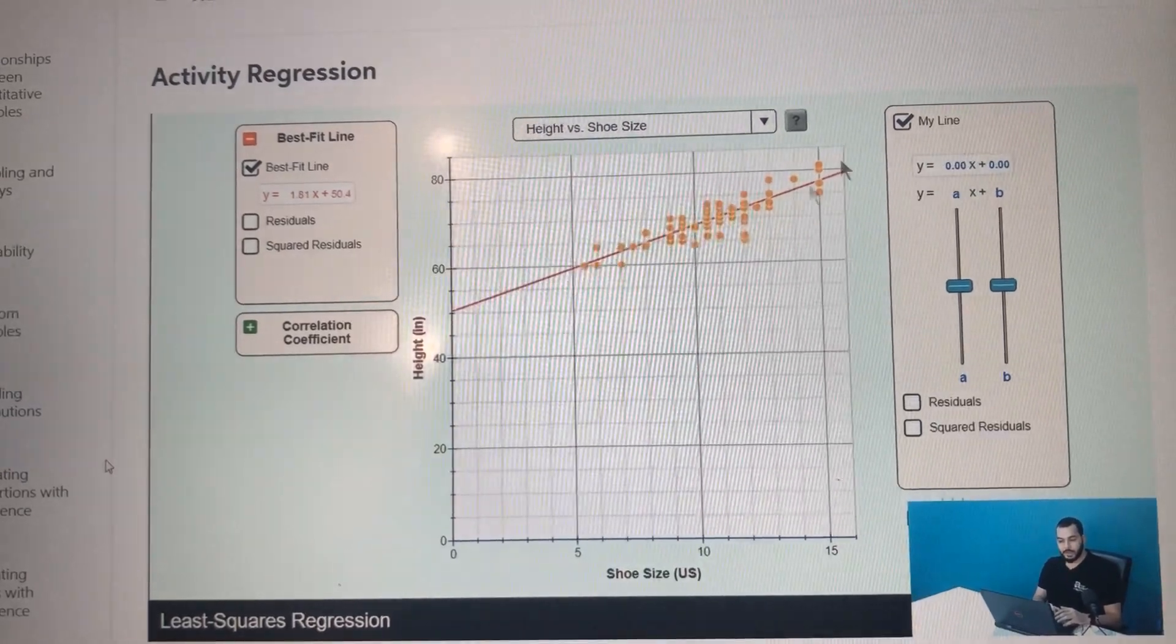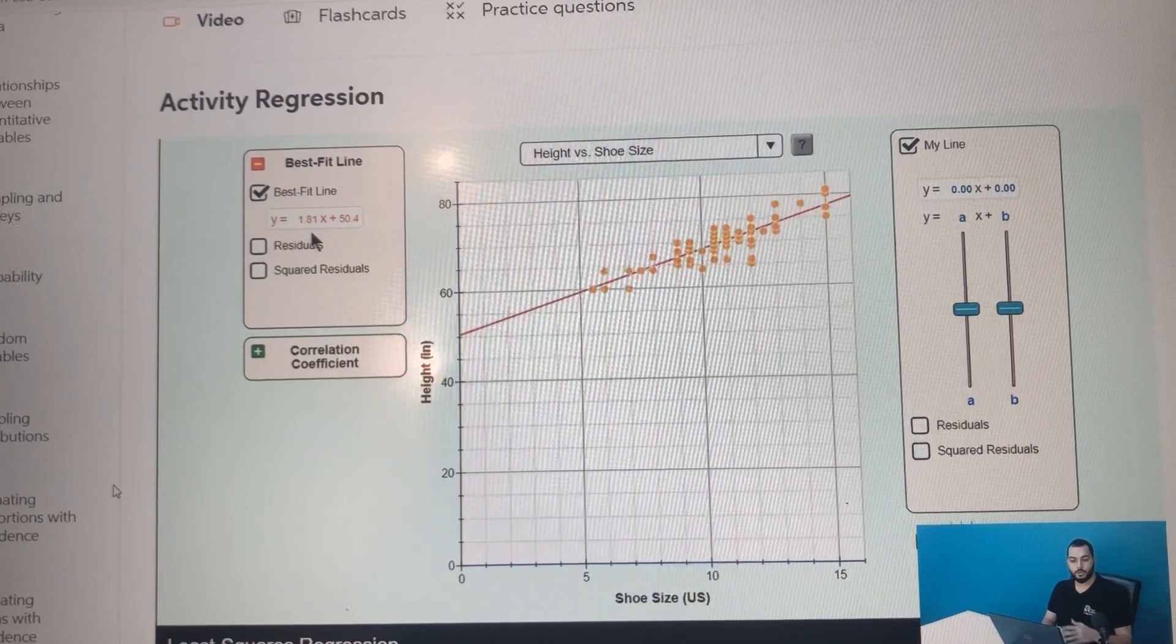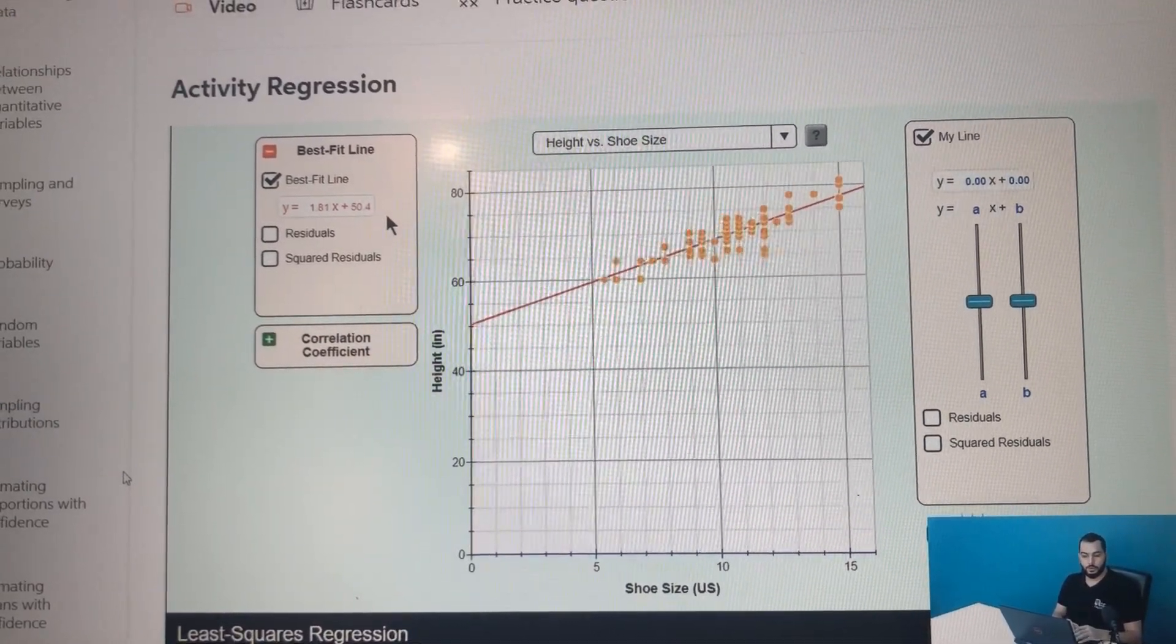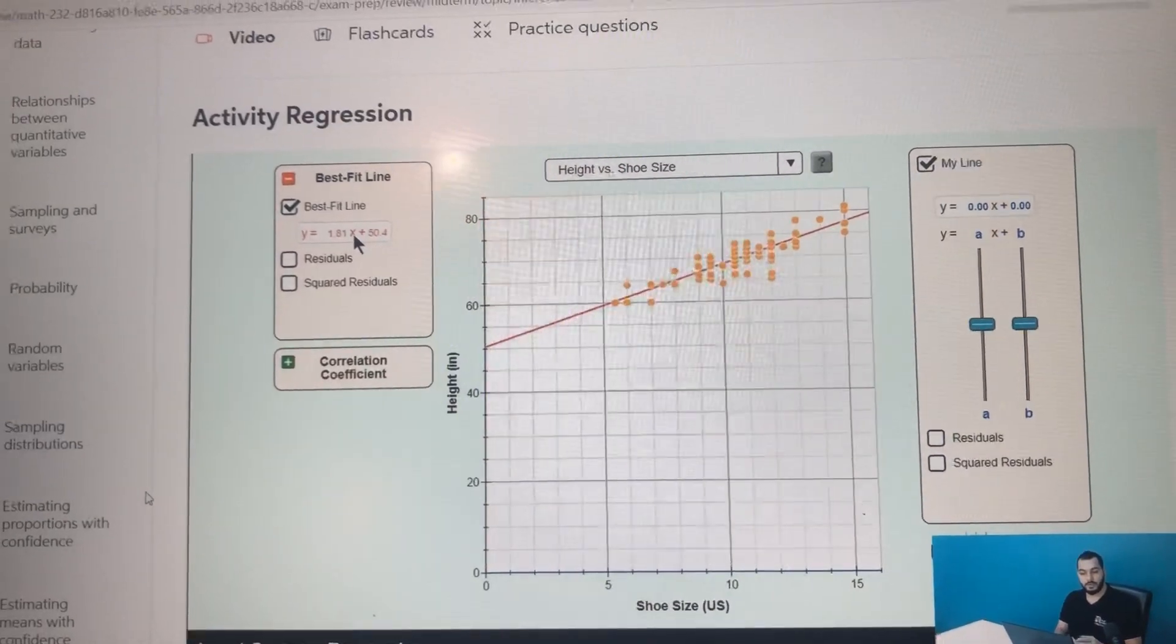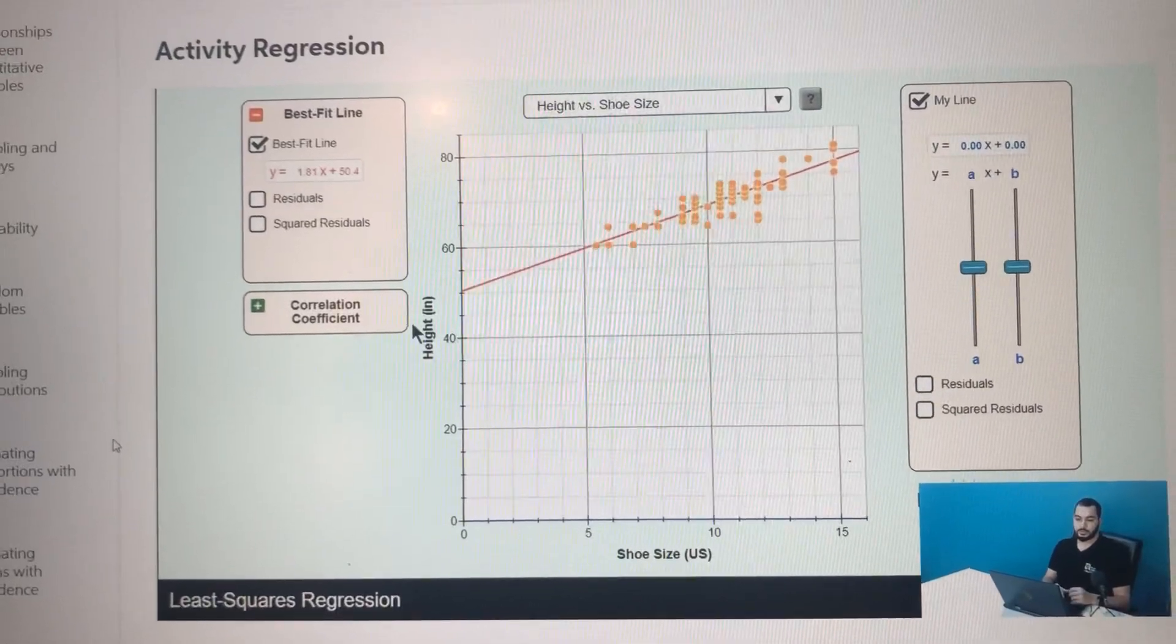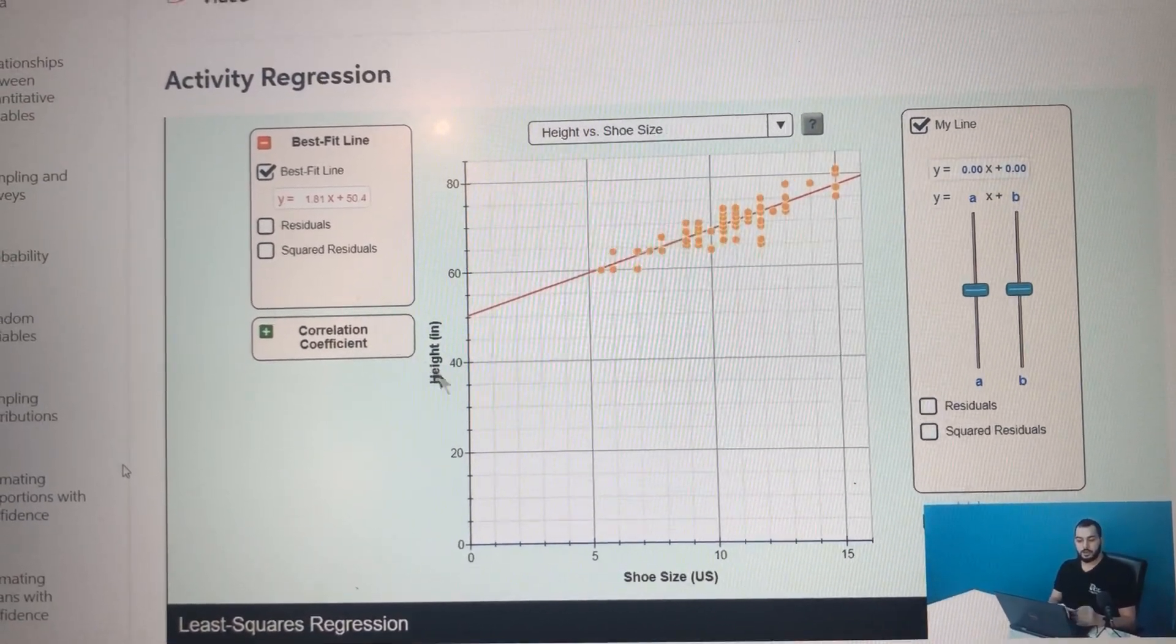Now from this line, we found out that it is represented with this equation you see here: y equals 1.8x plus 50.4. So if we put four instead of x, we will find out the value of y that corresponds to the value of x. X represents the shoe size and y represents the height.